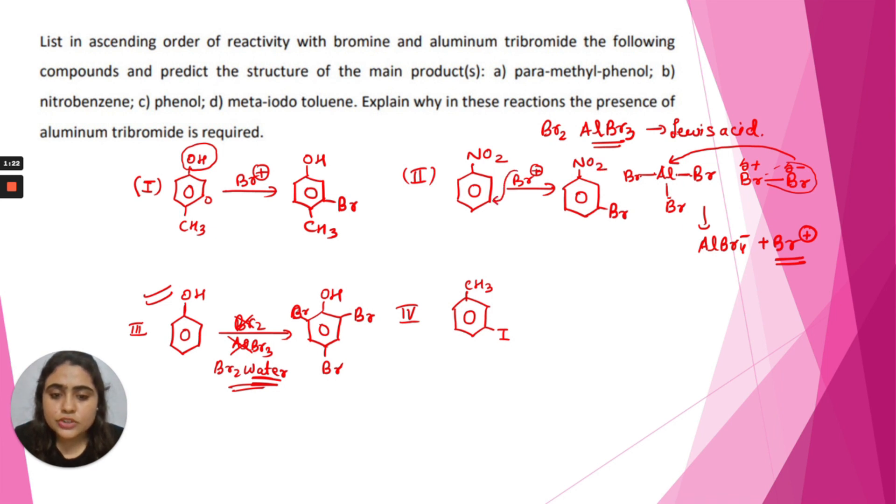This bromonium ion will attack the meta position because here it is a partial negative center. The ortho and para positions of nitrobenzene occupy a positive center. We can see this in the resonating structures of nitrobenzene. That's why this bromonium ion will attack the electron-rich center, which is the meta center.